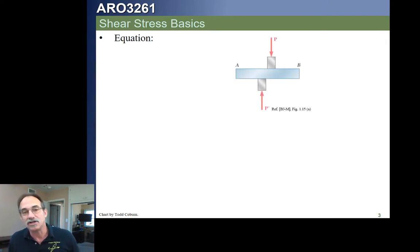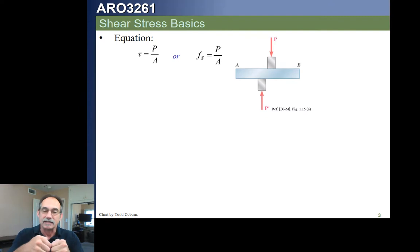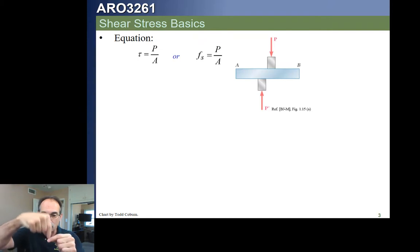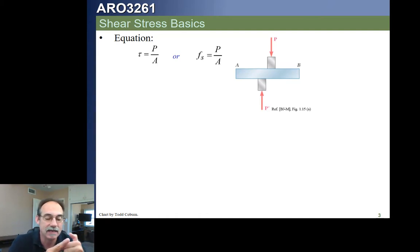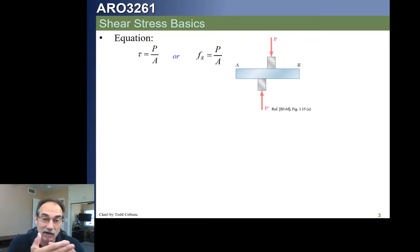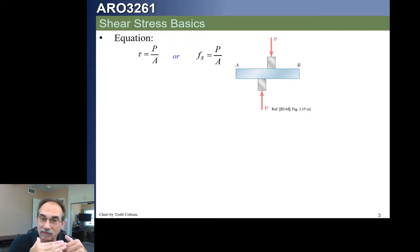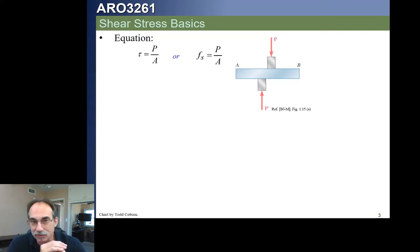I'm going to use the term 'direct shear' when we have a really short eccentricity. Remember from statics, if we have a force at a distance, it causes a moment about that point. When we talk about shear today, we're calling it direct shear because we're going to pretend the eccentricity is so small there's no real moment. We're just looking at the average stress due to the shear.